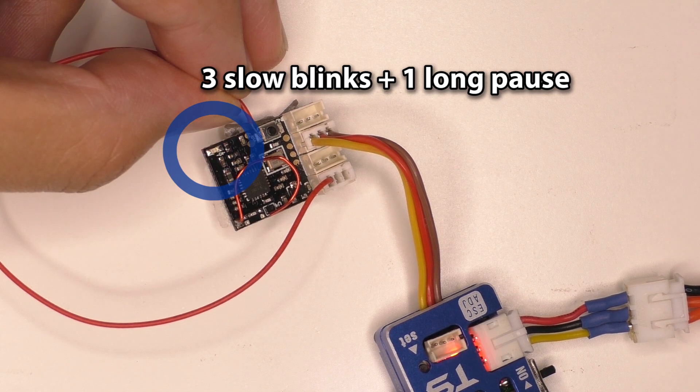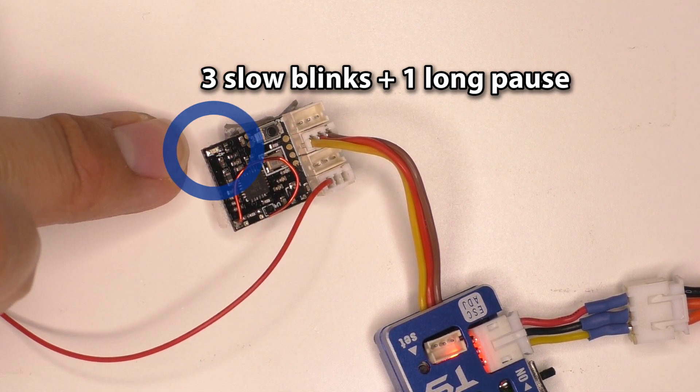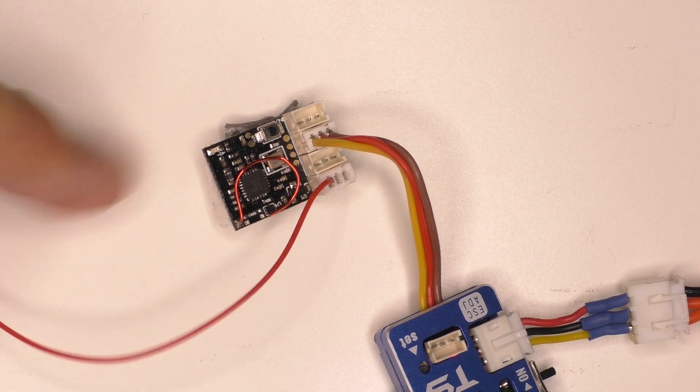You'll get the light sequence with three slow blinks and one long pause. This means that it is in forced update mode. Now you can let go of the wire.